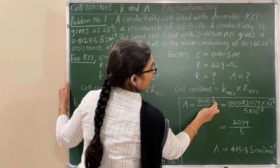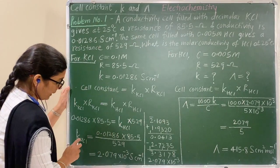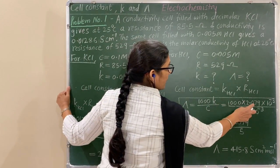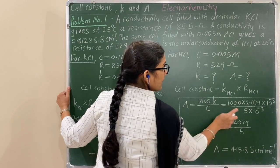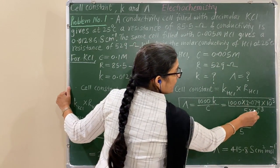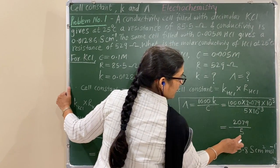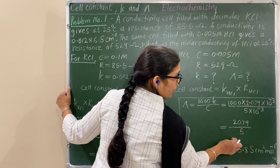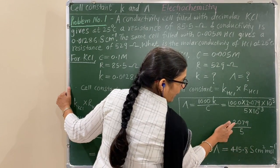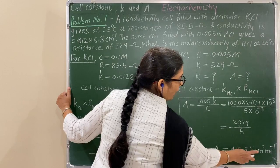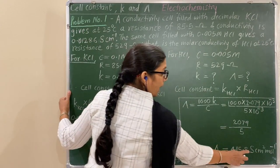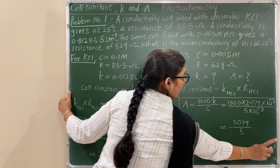Substitute 1000 times the conductivity of SCL (as determined) and divide by the concentration of SCL. The units cancel out appropriately. Log calculation is not required here — directly divide the values to get the answer. The unit of molar conductivity is Siemens centimeter squared per mole.